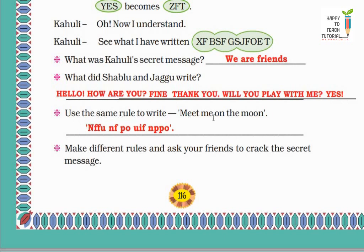Now next: Use the same rule to write 'Meet me on the moon'. Now we have to code this message using the same rule. So what will we write? Change each letter with its next letter. That is our rule: that each letter should be changed with its next letter. So look, M's next letter is N. E's next letter is F. E's next letter is F. T's is U. M's is N. E's next letter is F. O's next letter is P, and N's next letter is O. T's next letter is U. H's next letter is I. E's next letter is F. M's next letter is N. O's is P, and N's is O. In this way we have coded this message.